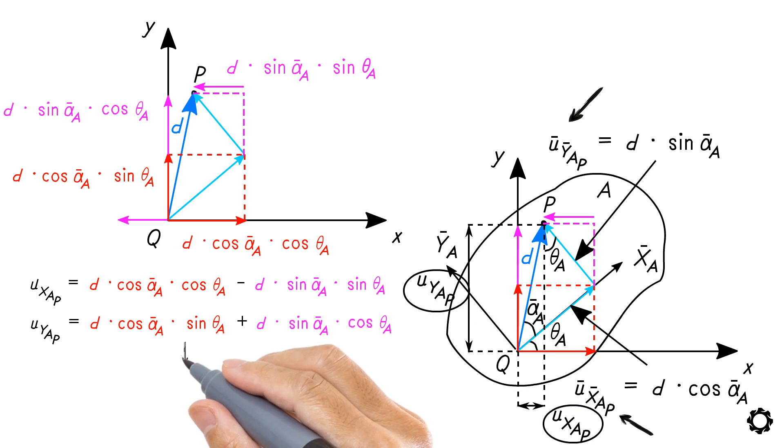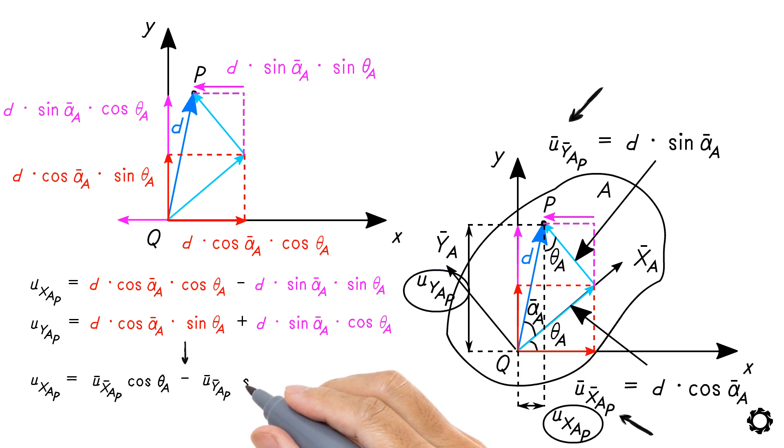We can write the same equations as u_x_ap equals u̅_x̅_ap·cos(θ_a) minus u̅_ȳ_ap·sin(θ_a). u_y_ap equals u̅_x̅_ap·sin(θ_a) plus u̅_ȳ_ap·cos(θ_a).